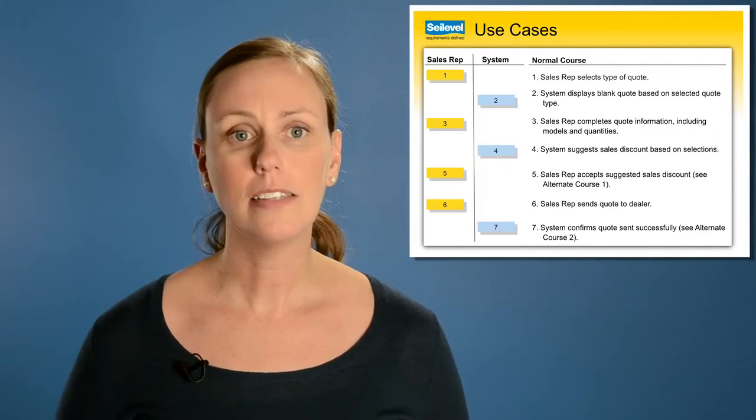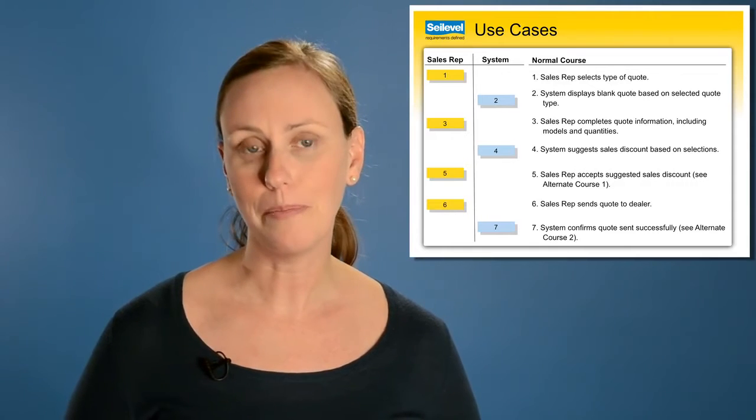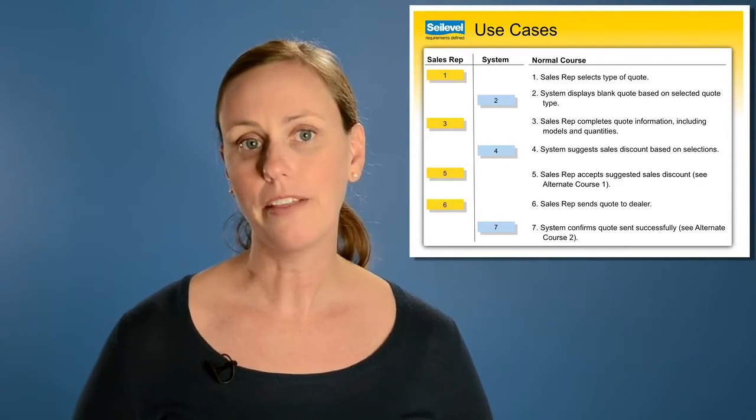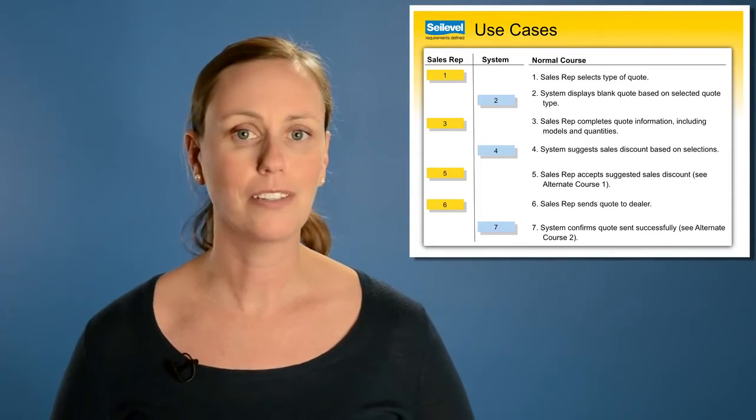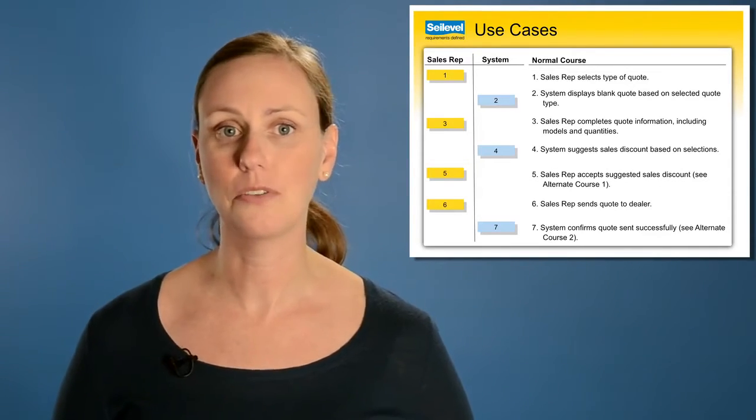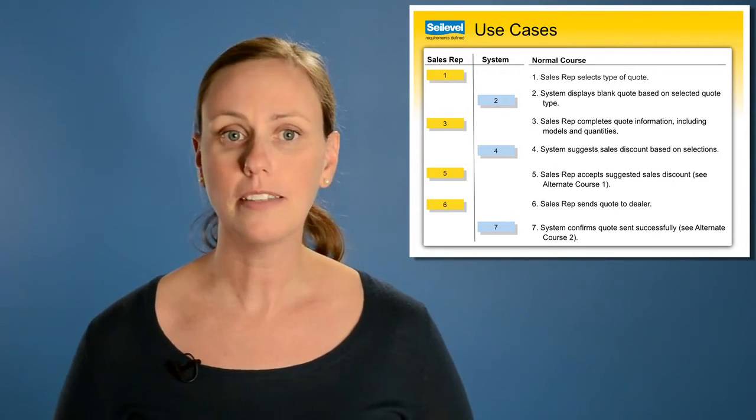Also in this example, we can see on step five how there is an alternate path referenced. In the main path, the sales rep accepts the suggested sales discount. But we also need to handle the path in which the sales rep does not want to accept that discount. The alternate path would explain the steps to follow.